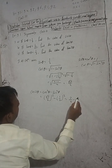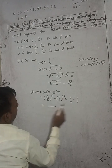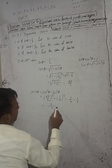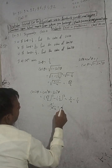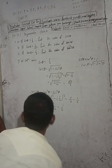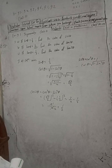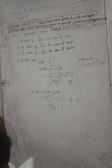Then root 3 squared is 3 and 2 squared is 4, minus 1 squared is 1 and 2 squared is 4. This is a like fraction, so write 4 down. 3 minus 1 is 2, giving 2 by 4, which equals 1 by 2. So cos 2 theta is equal to 1 by 2.